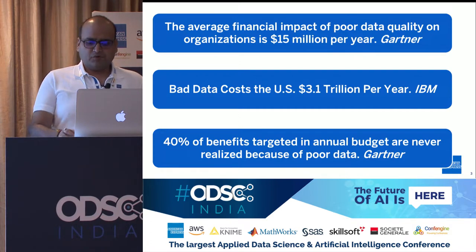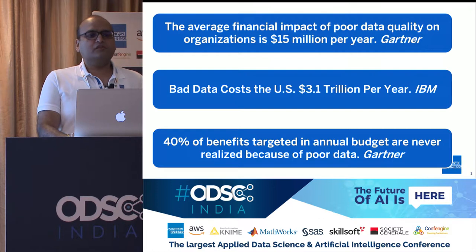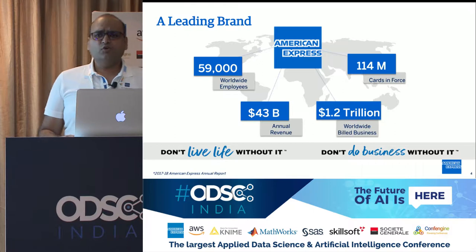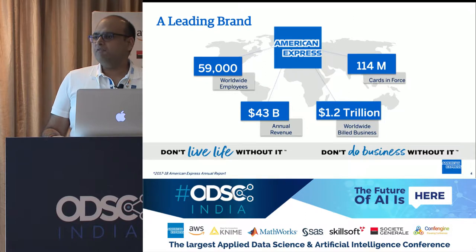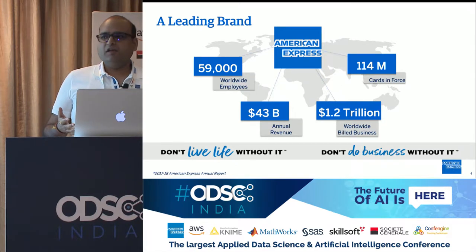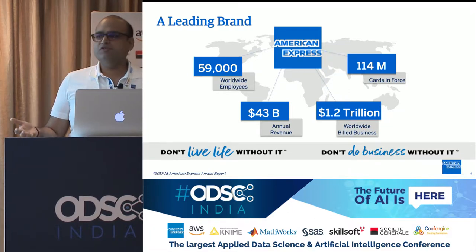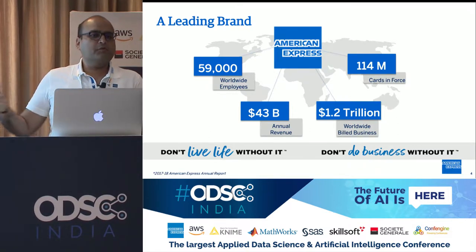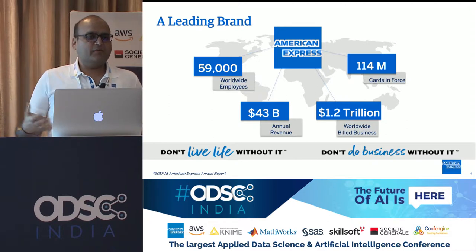Coming to American Express — why is this so important to us? American Express is a truly global company with presence in 134 countries and 59,000 employees. Our billed business is around $1.2 trillion. Just to give context on the size: the Indian economy is around $2.6 trillion in GDP, so we are close to 45% of that in terms of our billed business. That's the scale and numbers we deal in.